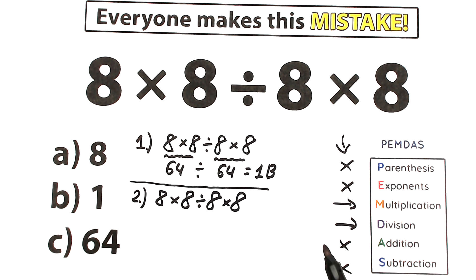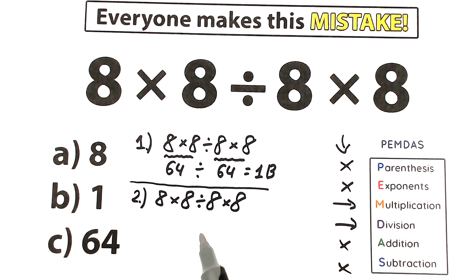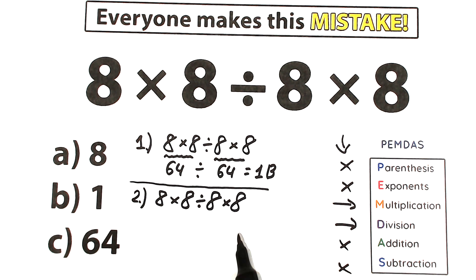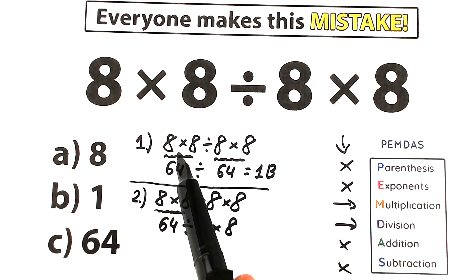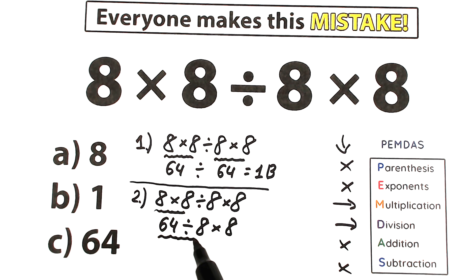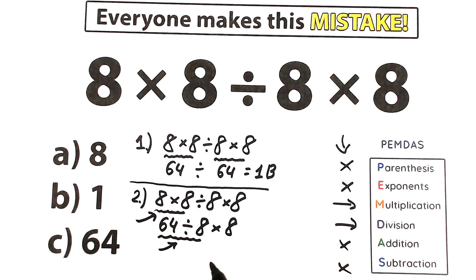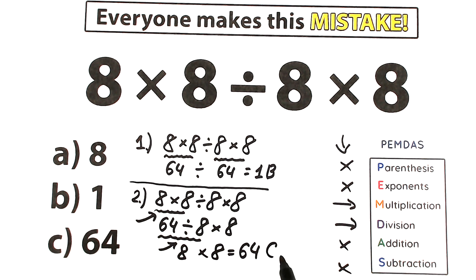So what is the correct order to do this problem? We should scan for the first sign from left to right, because multiplication and division have the same priority in PEMDAS. The first sign from left to right is multiplication, so we multiply 8 times 8, which equals 64. Now we have 64 divided by 8, times 8. Next, 64 divided by 8 equals 8 — because division is now first from left to right. Then 8 times 8 equals 64. So our answer is 64, which is option C.